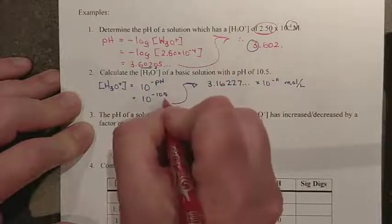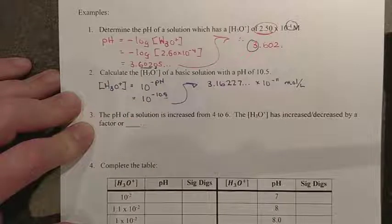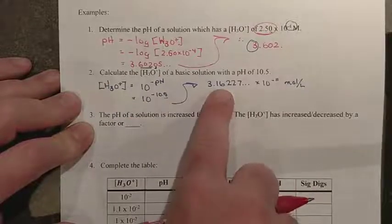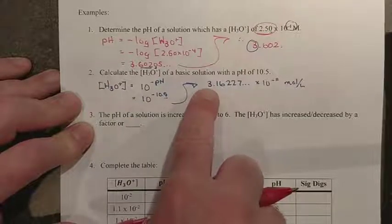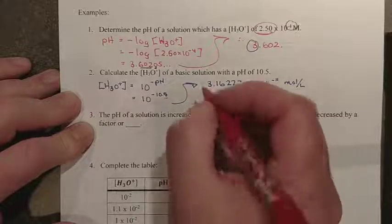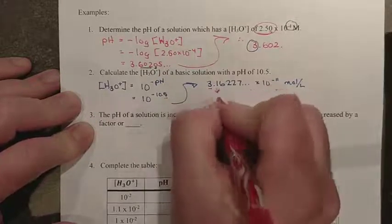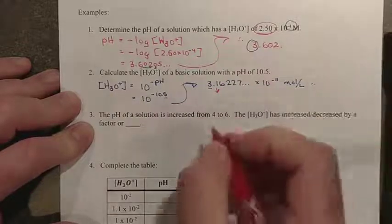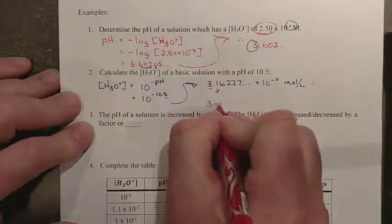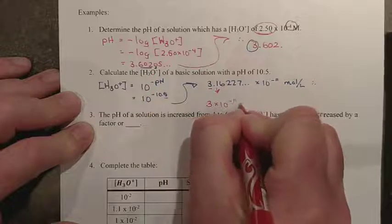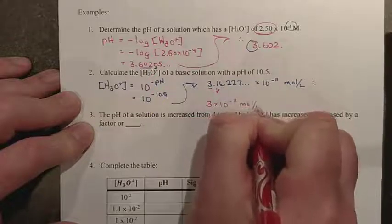So you'll notice that there is only one significant digit here. In a scientific notation or regular expression number, we count anything except for leading zeros. And so there's your one sig dig, and the one rounds down. So therefore, the correct final answer here is 3 times 10 to the negative 11 moles per liter.